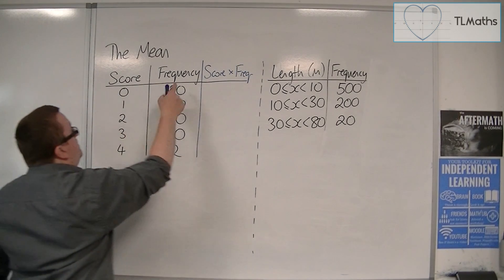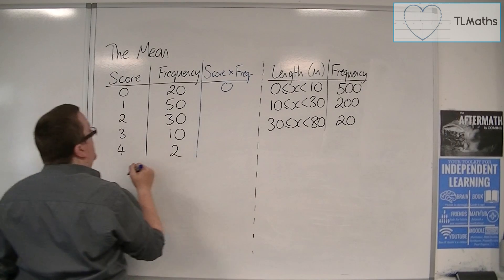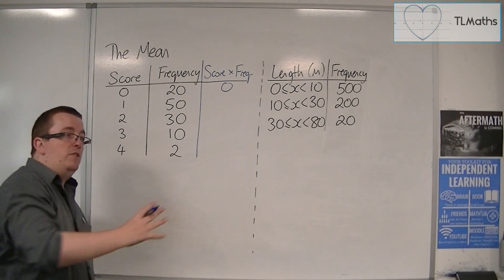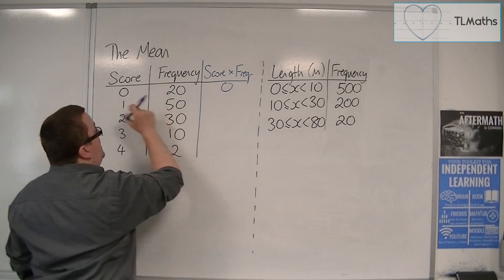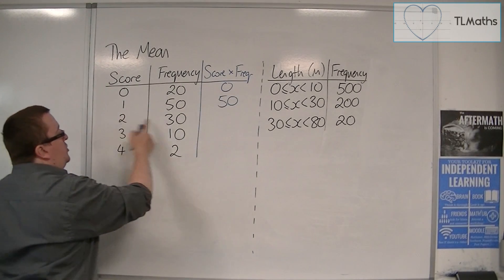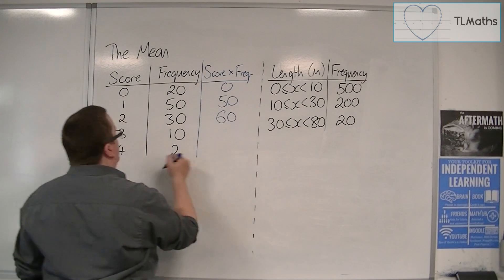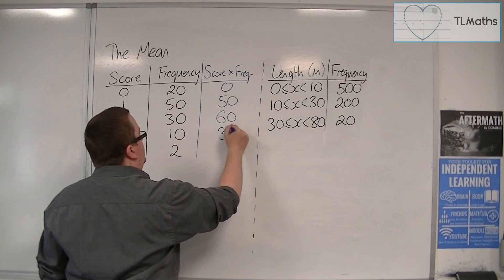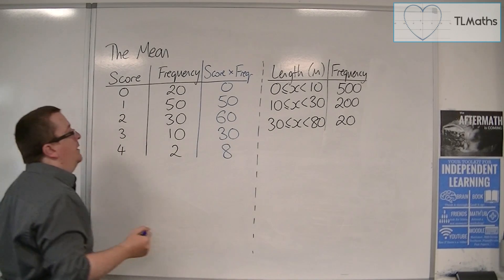So we have 0 times 20, well that's just 0. So all those zeros, those 20 zeros, add up to nothing. We have 50 ones, so they'd multiply together and make 50. 2 times 30, so that's 60. 3 times 10, that's 30. And 4 times 2, well that's 8.